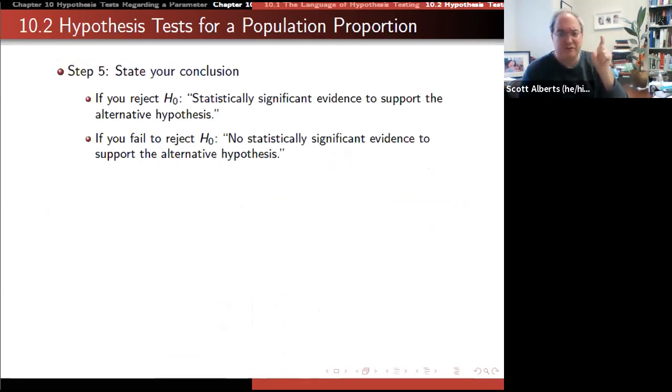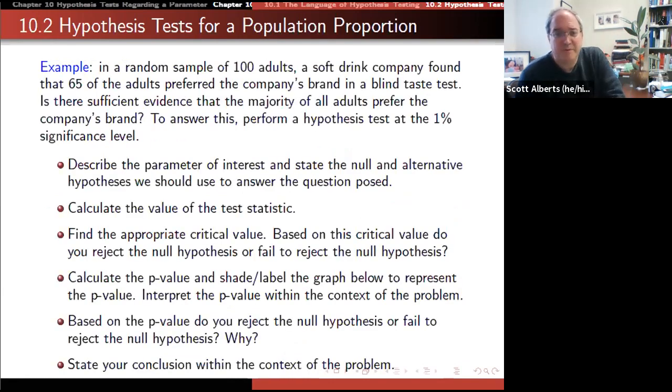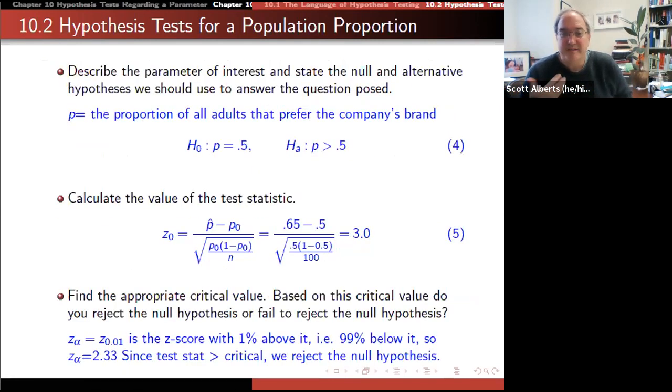Finally, the last step of a hypothesis test is to write a sentence in actual English with a verb. The idea is: there is significant evidence to support the alternative hypothesis, or we fail to find evidence to reject the null hypothesis. Here's an example. We have two different soft drinks. Pepsi used to do this when I was a kid. We give 100 people the soft drink and ask which they prefer. It turns out 65 of them thought it was better.